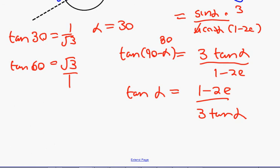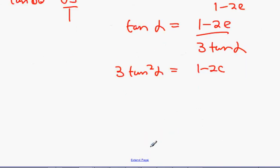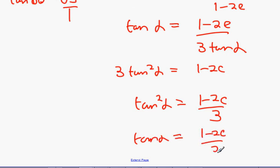Now, that's done. What we're going to do is cross multiply and we get 3 tan squared alpha. There's 1 minus 2E. Bring 3 down and square root it. So, we get tan alpha equals 1 minus 2E all over 3 square root it.